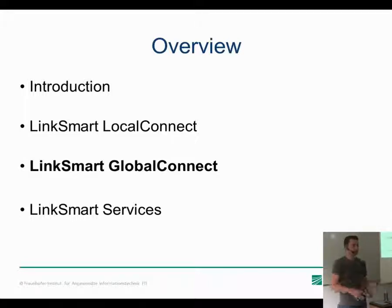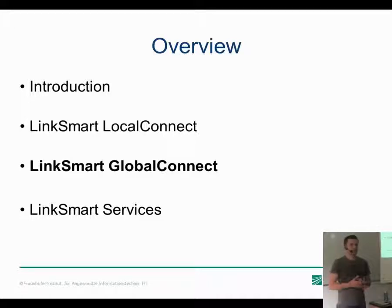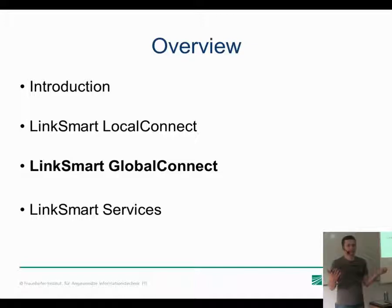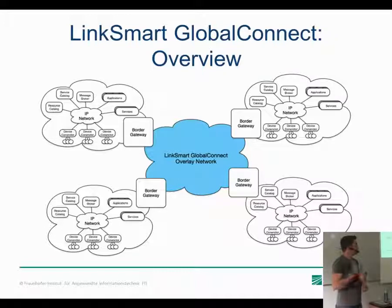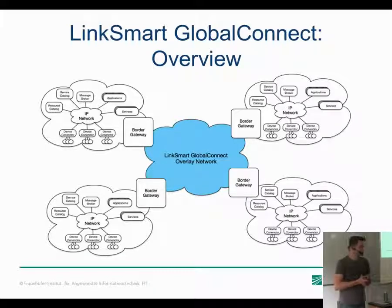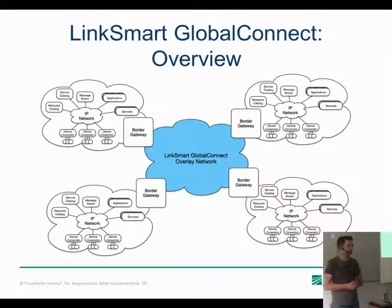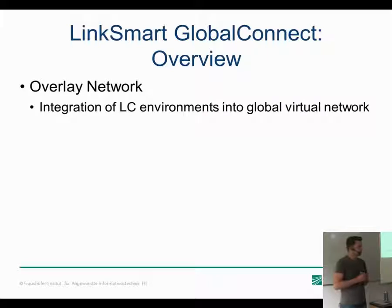Now that we have infrastructure for a private IP network — integrating devices, deploying application services, discovering services — the next use case involves applications requiring communication beyond a single private network, such as smart city applications or platforms. For those applications we have Global Connect. As shown in this example, four Local Connect environments are connected together in the Global Connect overlay network, which provides three basic functionalities.